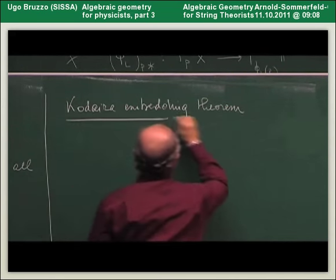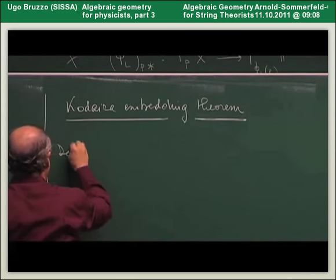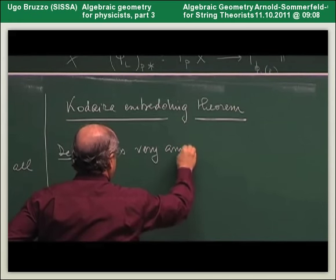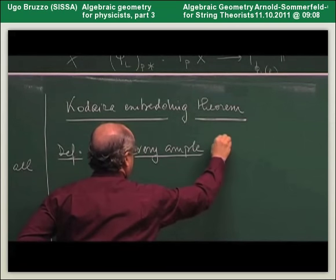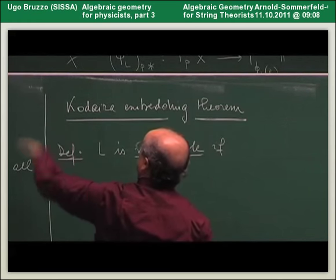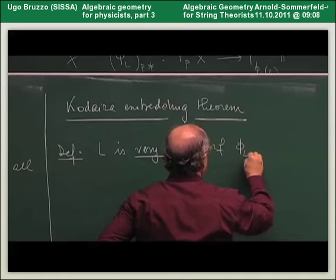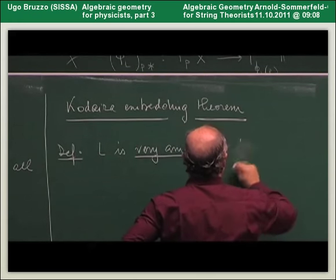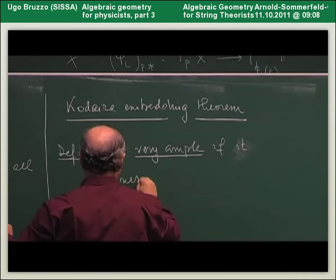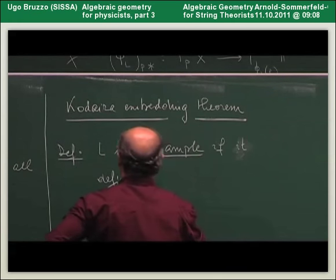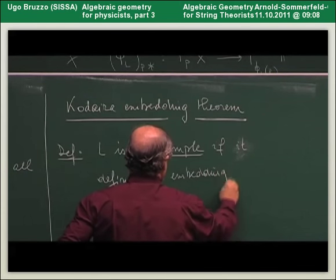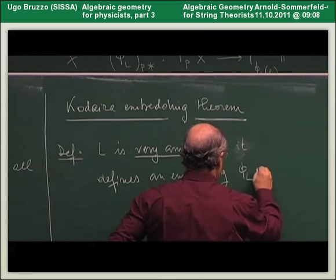First we give some names. We say that L is very ample if — assuming L has sections and is base point free — the corresponding morphism is an embedding.